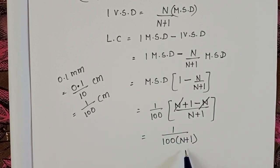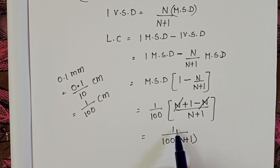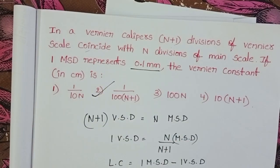1 by 100 into (n+1). So, least count or vernier constant equals 1 by 100 into (n+1). Second option is correct.